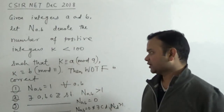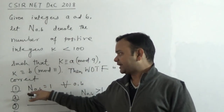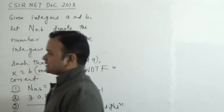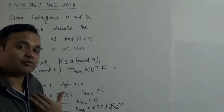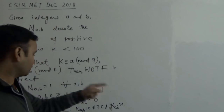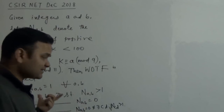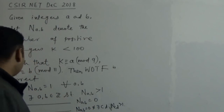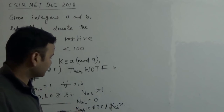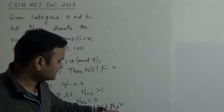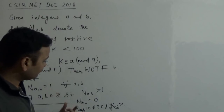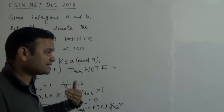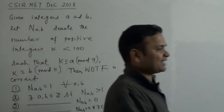So you can ask which of the following are correct. Option 1: N(a,b) is equal to 1 for all a, b — doesn't matter which a or b you give. Option 2: there exist a, b in Z such that N(a,b) is greater than 1. Option 3: there exist a, b in Z such that N(a,b) equals 0. Option 4: there exist a, b with N(a,b) = 0 and there exist c, d in Z such that N(c,d) is greater than 1.